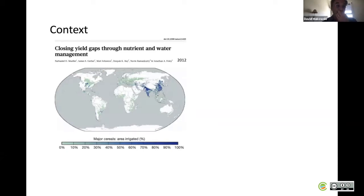This map shows the current irrigated areas in the world for maize, wheat, and rice. You can see the large spatial variation of irrigated areas in the world.